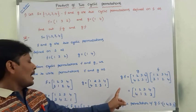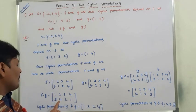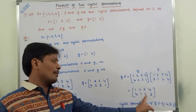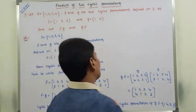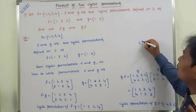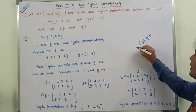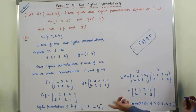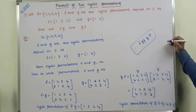Observe F∘G and G∘F: in F∘G, 1's image is 3; in G∘F, 1's image is 4. In F∘G, 2's image is 4; in G∘F, 2's image is 1. In F∘G, 3's image is 2; in G∘F, 3's image is 2. In F∘G, 4's image is 1; in G∘F, 4's image is 3. Therefore, F∘G ≠ G∘F. This is the conclusion: whenever the product of two permutations is not equal, the cyclic permutations are also not equal. This is how we find the product of two cyclic permutations.